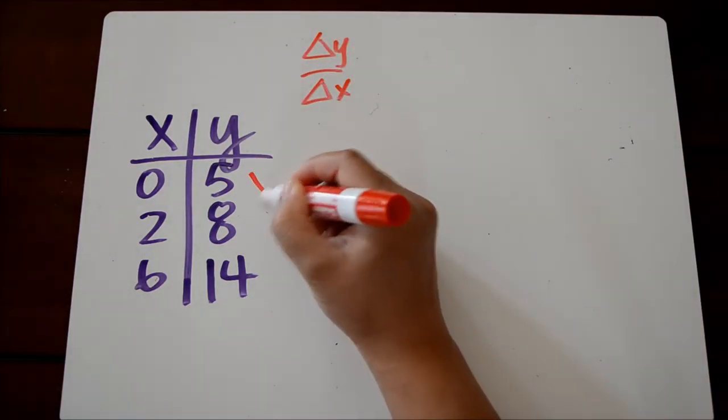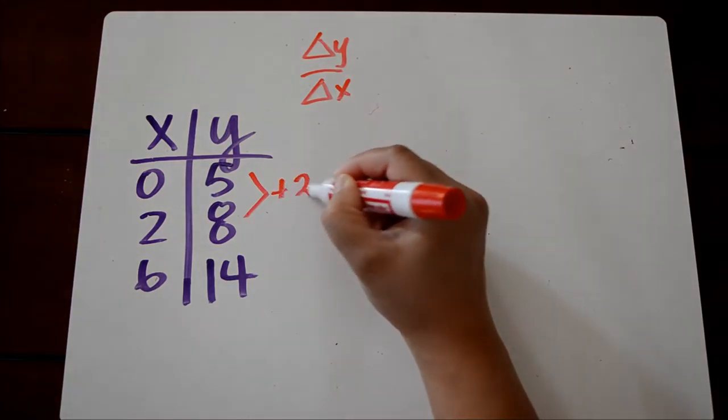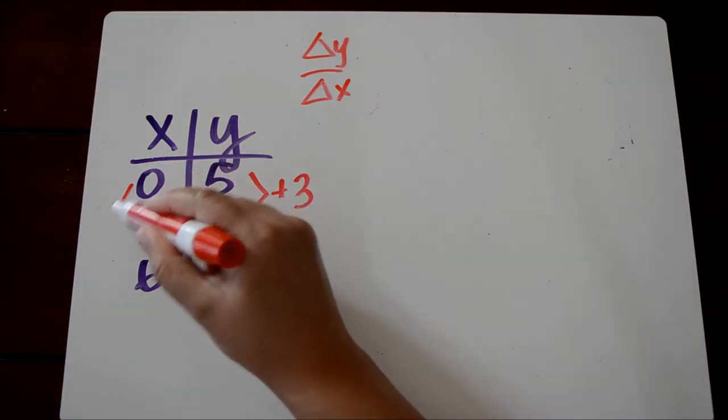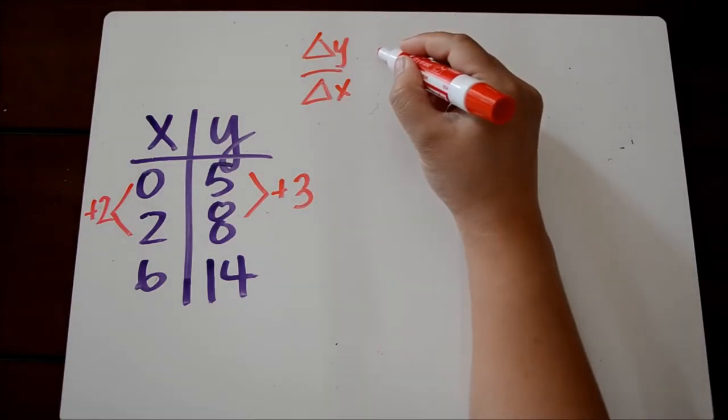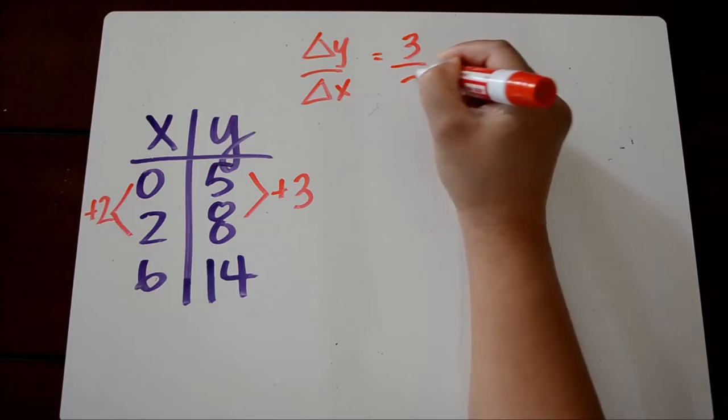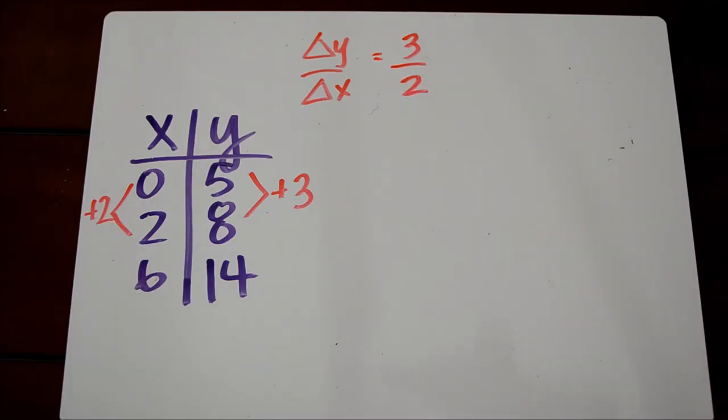To get from 5 to 8, we have to add 3. And to get from 0 to 2, we have to add 2. So our slope would be 3 over 2, and that can't be reduced, so we'll just keep it like that.